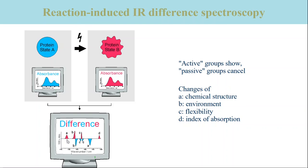Alternatively, a vibration might experience a shift in frequency due to a conformational or environmental change that alters the electron density of the vibrating bonds or the coupling with other vibrations. This band shift leads to a pair of signals composed of a negative and a positive band which are close together. An example is shown for the two bands marked B in the amide-1 region of the polypeptide backbone. Here, the amide-1 vibration absorbs at lower wavenumber in the initial state A than in the product state B.